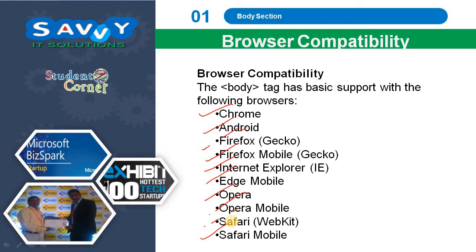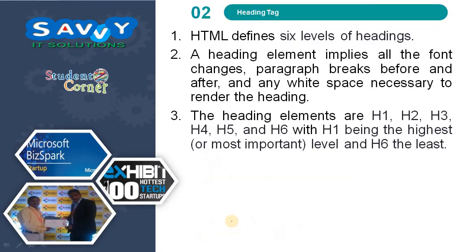Now we move to heading tags. HTML provides 6 levels of headings, from h1 to h6. A heading element implies all the font changes, paragraph breaks before and after, and any white space necessary to render the heading. The heading elements are h1, h2, h3, h4, h5, and h6, with h1 being the highest or most important level and h6 being the least.